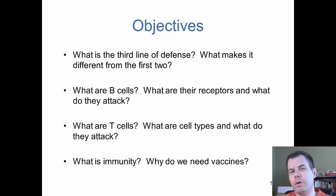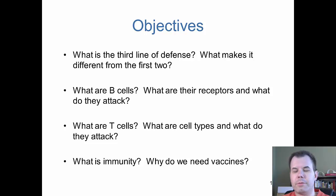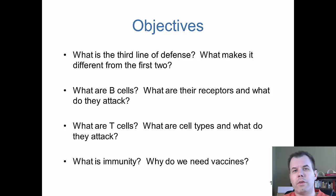This can be referred to by either name, but it involves the third line of defense. In the previous chapter, chapter 14, we talked about innate immunity — the mechanical barriers and white blood cells that do phagocytosis, inflammation, and other things. Today we're looking at acquired or adaptive immunity, which involves the B cells and the T cells.